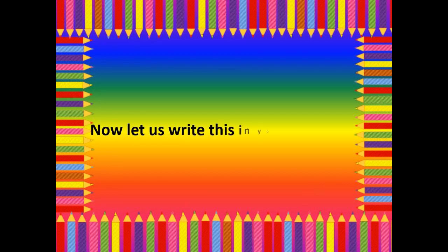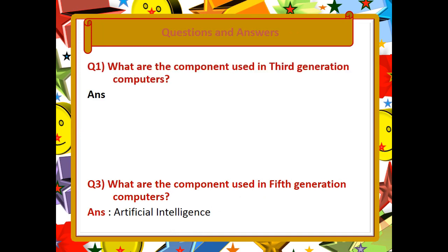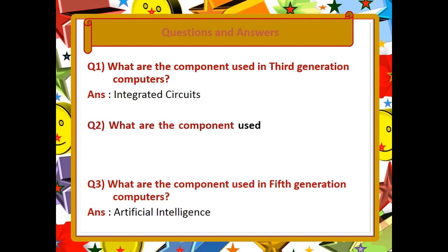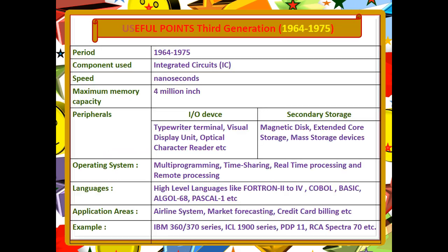Now write these points in your notebook. Question 1: What are the components used in third generation computers? Answer: Integrated circuits. Question 2: What are the components used in fourth generation computers? Answer: Microprocessor. For the fifth generation it is artificial intelligence. Write these useful points in your notebook.